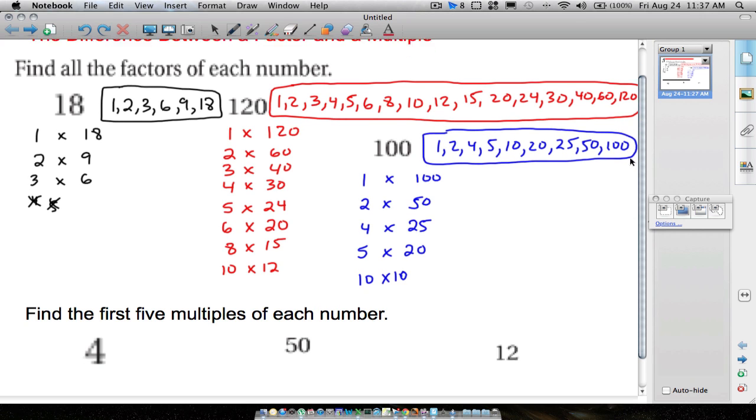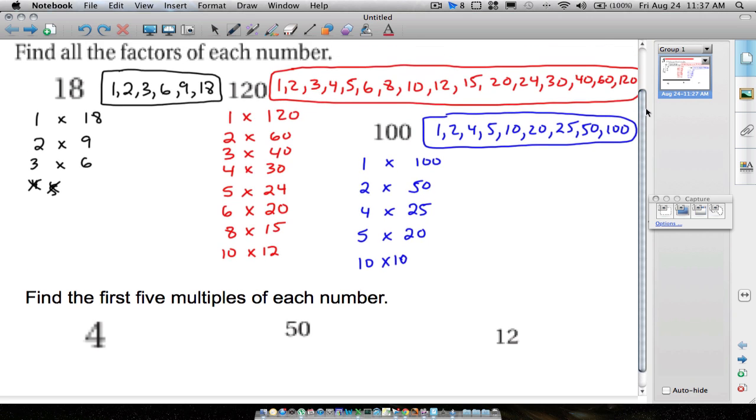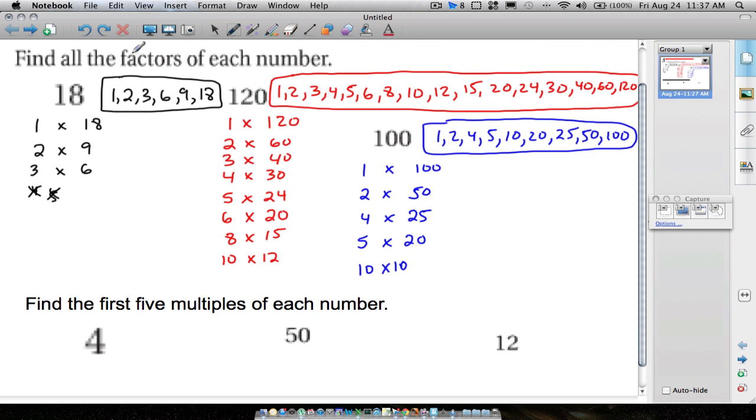Now, a multiple. Don't get these confused. A factor of 18, notice that all these numbers that are factors are either the number 18 itself or numbers that are smaller, because all of these numbers will go into 18. Same thing for 120. All our factors of 120 are less than or equal to 120. That's because 120 is divisible by all of these numbers. Same thing for 100. But now a multiple. A multiple means multiply.